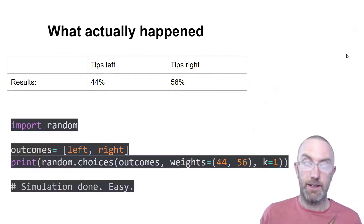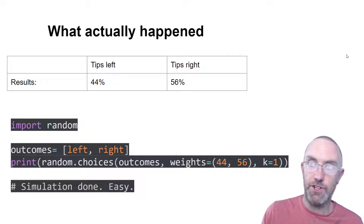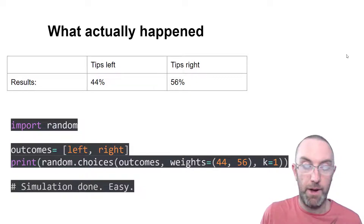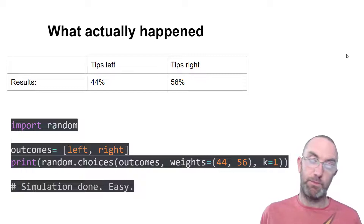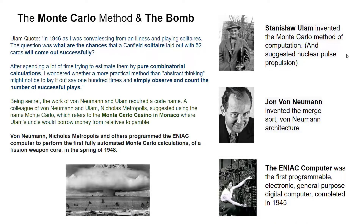So what you do instead is put a pencil on your finger and just drop it a hundred times. Count how many times it went left, count how many times it went right. It may not be a general solution for all fingers, but it will certainly predict your finger. Here's a little Python program using import random with two possible outcomes that will generate a random choice between left and right, weighted 44 to 56%. It's easy to simulate this with not a lot of maths. It's called the Monte Carlo method.